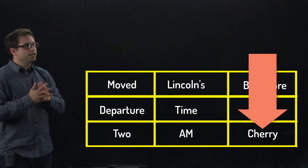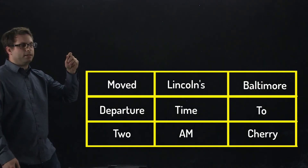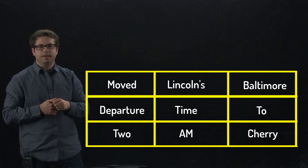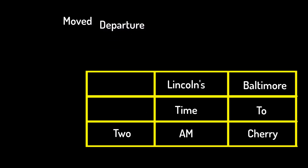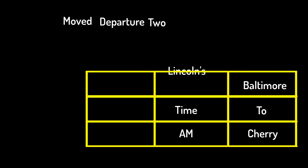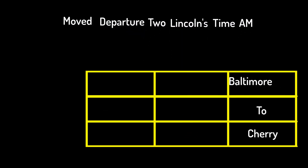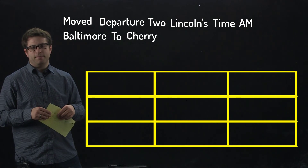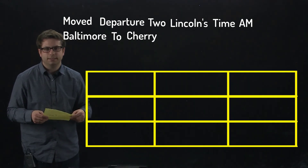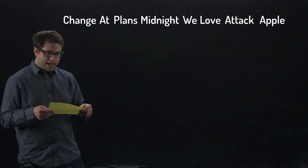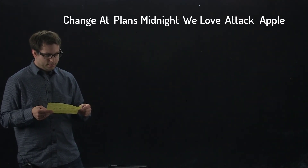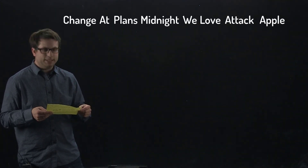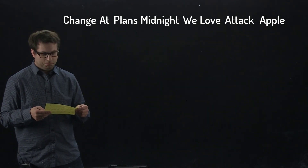To encrypt the message, instead of reading the words from left to right, we now read them down each column. Our encrypted message reads the words in that column-by-column order. They responded to my message and sent back an encrypted message that reads: 'change at plans midnight, we love attack Apple.'